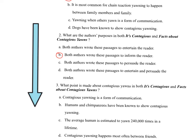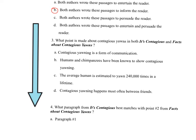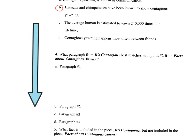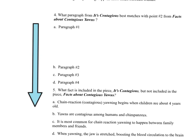Let's look at number three: what point is made about contagious yawns in both of the texts? We're looking for information found in both. I'm noticing a lot of us chose B — 'Humans and chimpanzees have been known to show contagious yawning.' B is the strongest answer. Good work on number three. Look at number four: what paragraph from 'It's Contagious' best matches with point two from 'Facts About Contagious Yawns'? Since you don't have the text in front of you, the best answer to number four is B, and many people chose this by going back to the text.